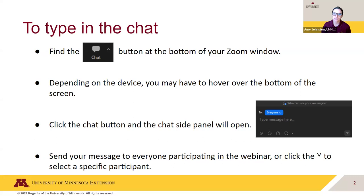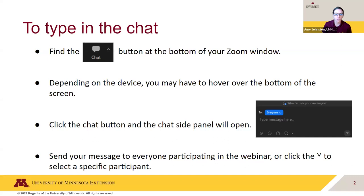Just a few housekeeping reminders to go over. First, please keep your microphone on mute until the Q&A portions of the webinar. If you have questions at any time, please type them in the chat and we'll get them answered. To find the chat in your Zoom window, look for the speaking bubble icon or the chat button. The chat defaults to all webinar participants, so to send a direct message to one individual, click the down arrow after "everyone" and select the specific participant.